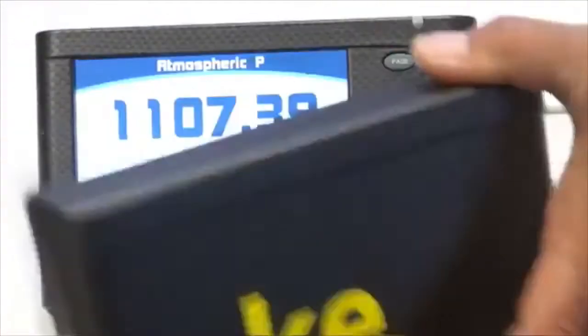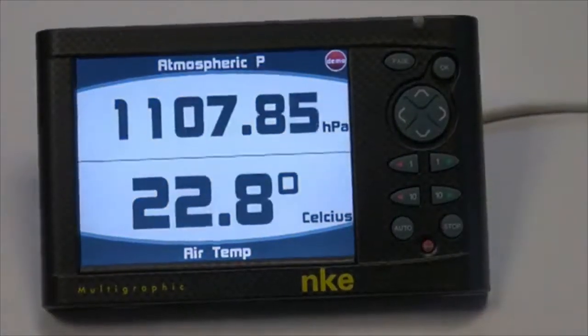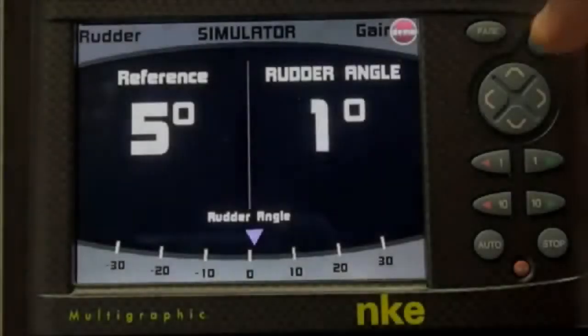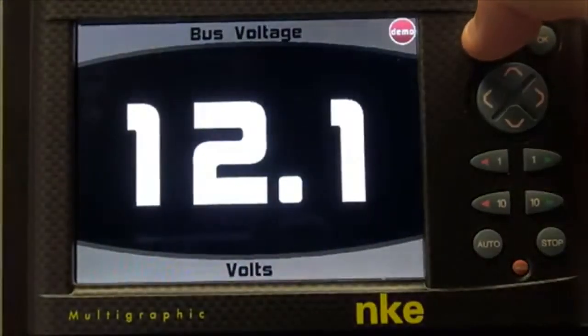NKE presents its latest innovation, the Multigraphic, a color display to manage everything on board: autopilot control, navigation data, AIS display, and many other external instruments.